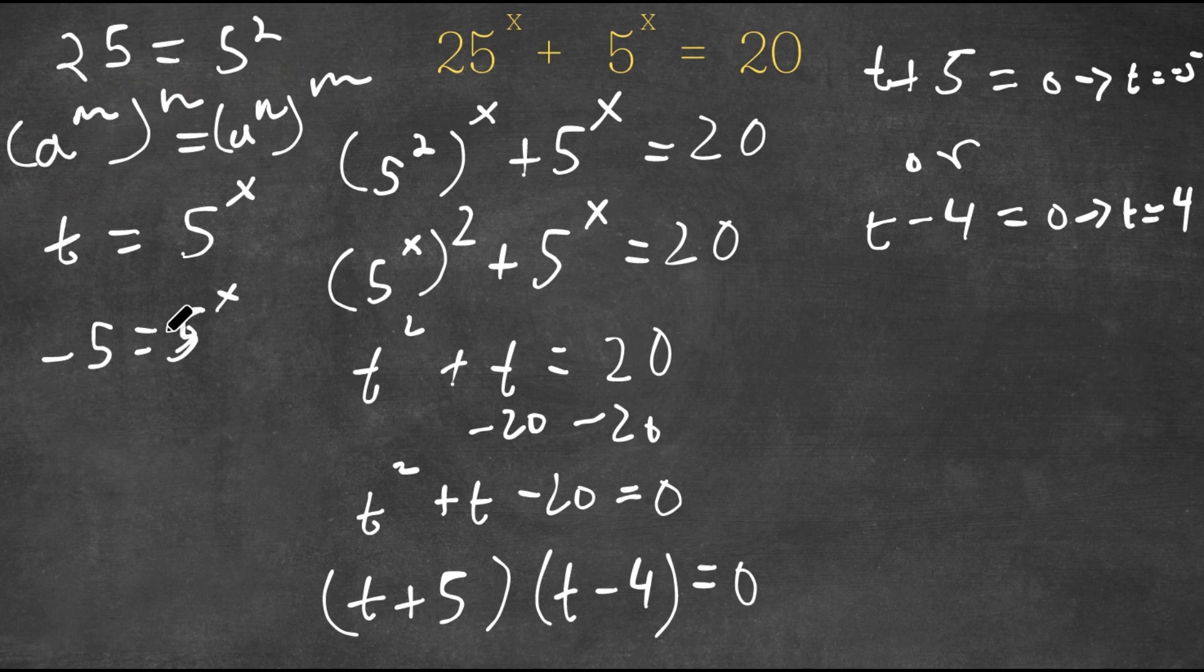This actually has no solution because you can't take a positive base to a power and get a negative result. So this is wrong, meaning t equals negative 5 is wrong. So that means that we are simply left with t equals 4.